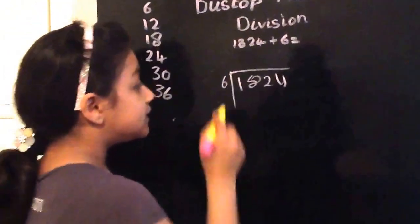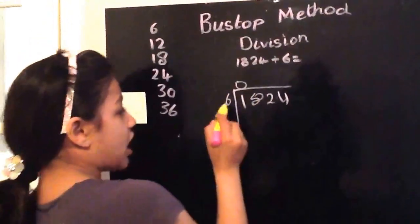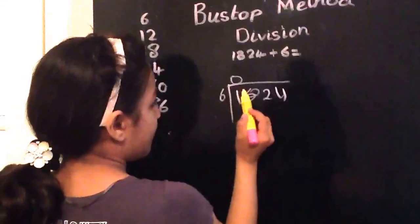How many sixes are in one? There isn't any six. See? There isn't. So zero. And the one goes over here.